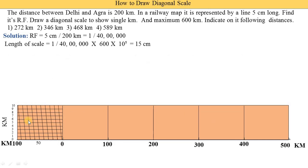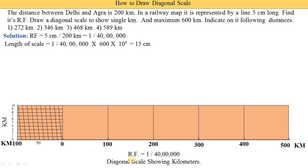We write down the representative fraction, which is 1 upon (40 × 10^5), and label it as a diagonal scale showing kilometers.